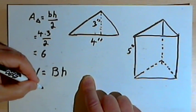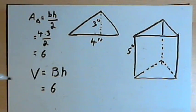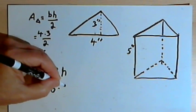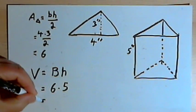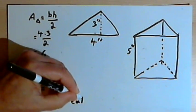The height is 5 inches. That means the volume is going to be 6 inches, the area of the base, times the height, which is 5 inches, or 30 cubic inches.